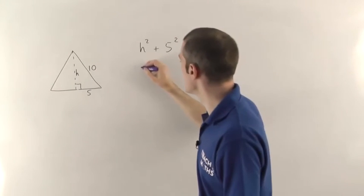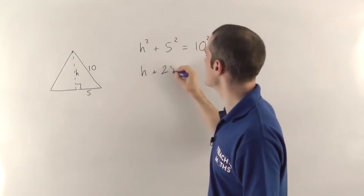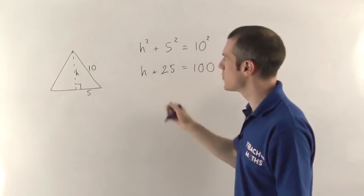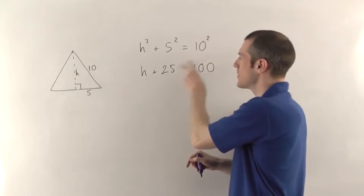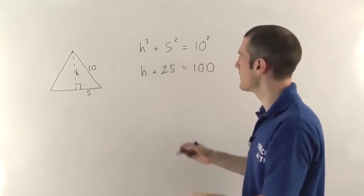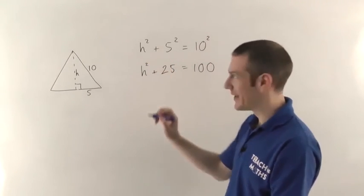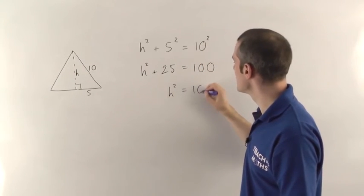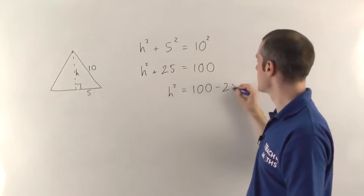Again, work out what you know. So 5 squared gives you 25. 10 squared gives you 100. And now again, because we're wanting the shorter side, we need to subtract these two. We're going to move the plus 25 over here and it becomes a minus 25. Oops, missed off the squared.